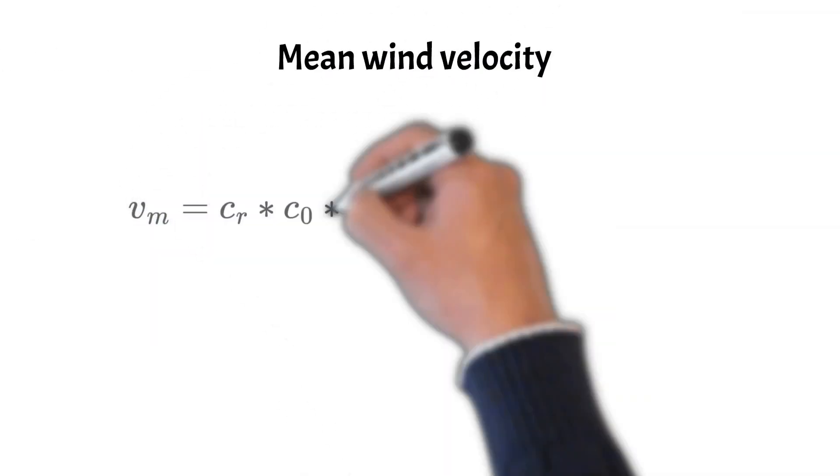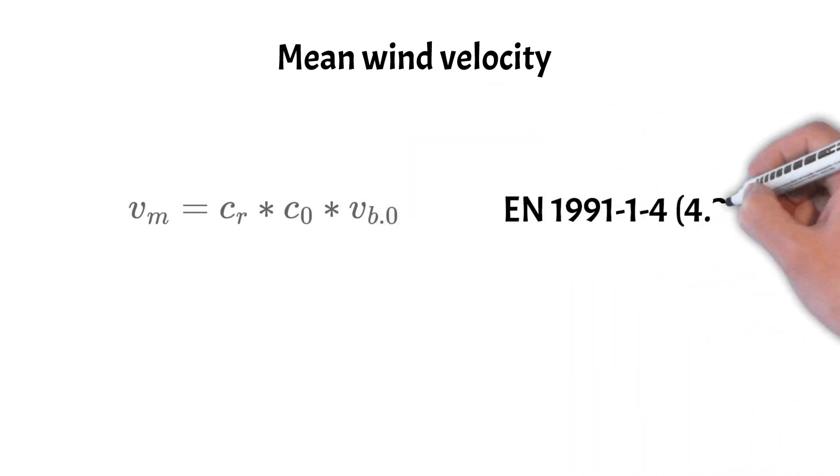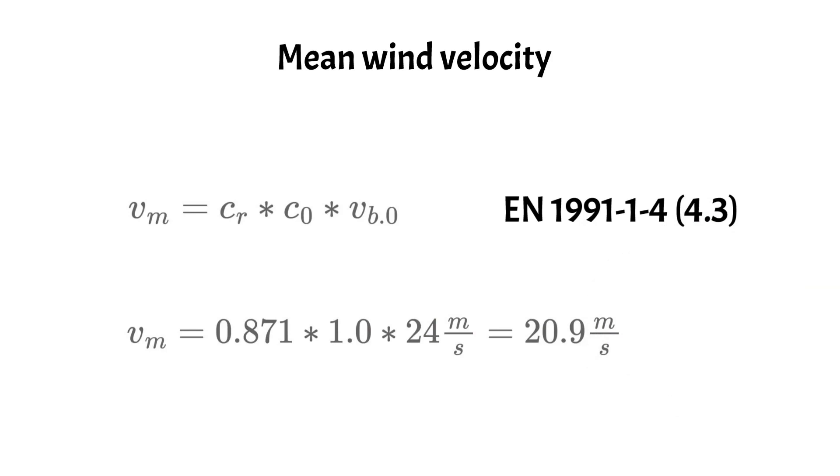Now we can calculate the mean wind velocity as CR times C0 times VB0. Inserting all the values that we have gotten we get a result of Vm of 20.9 meters per second.